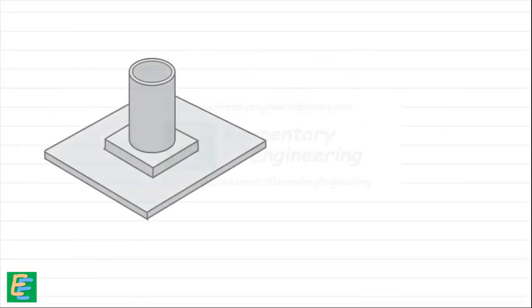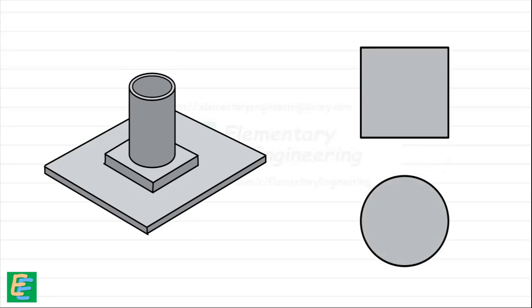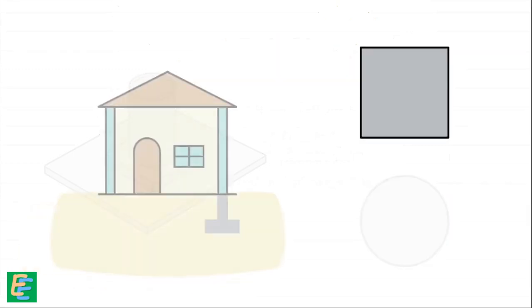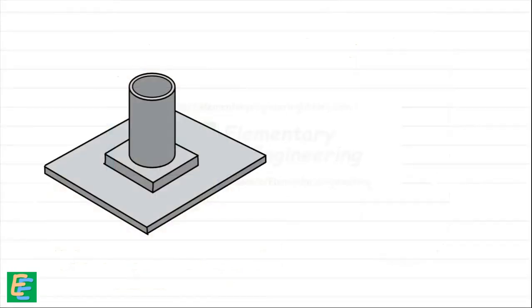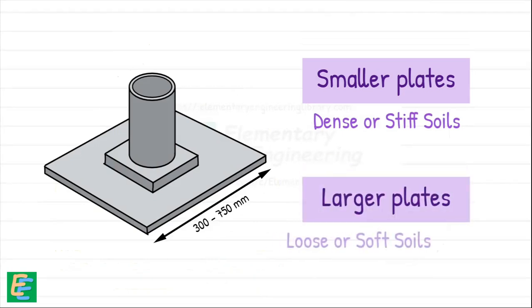In the plate load test, instead of estimating soil strength with your hand, we use a heavy metal plate. The plate used can be either square or circular. Circular plates are typically used for testing circular footings and road pavement evaluations, while square plates are used in most other cases, including foundations for buildings. The plate size ranges from 300 mm to 750 mm. Smaller plates are used for denser or stiff soils, whereas larger plates are preferred for loose or soft soils to better represent actual foundation behavior.